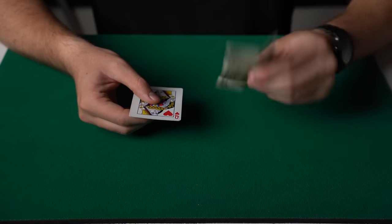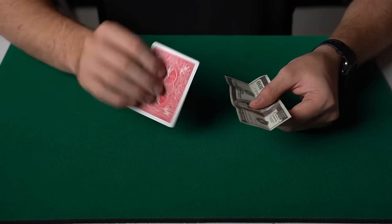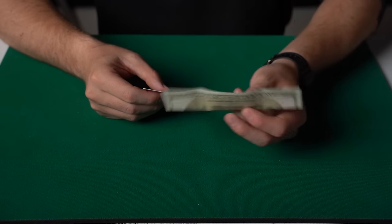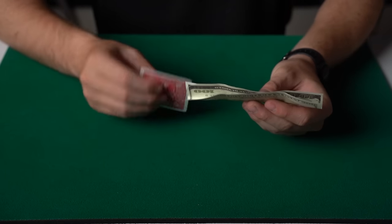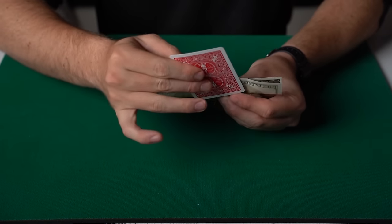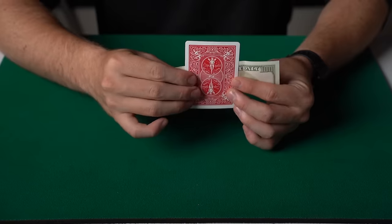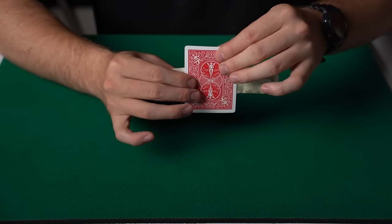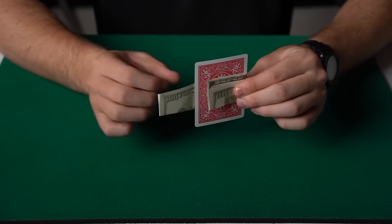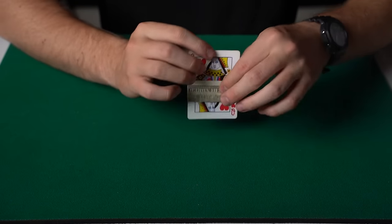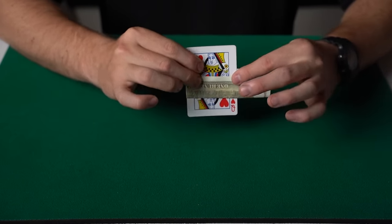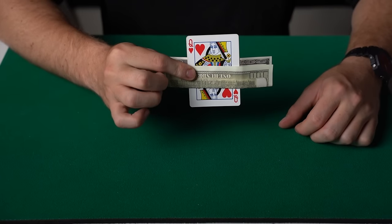So the magician has a $100 bill and a playing card. And what he does is he takes the money and he folds it up like this. And then he takes the playing card and places it in front of the bill. He then folds the bill around the playing card. And when he shakes and waves, the card now is melting straight through the bill. Just like that.